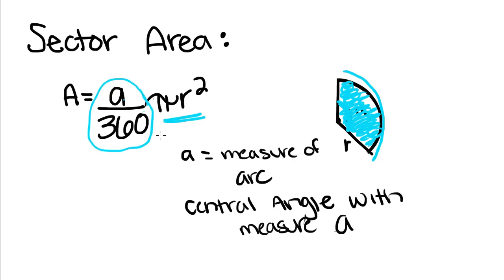And when we only want part of the area of a circle, we put this out front to tell us how much of it we're going to get. So A is the measure of the arc. And if you remember, a central angle has a measure of A. So let's do some examples now.